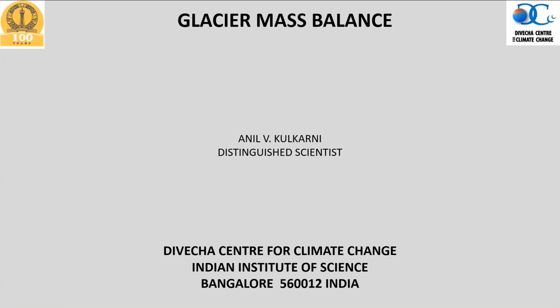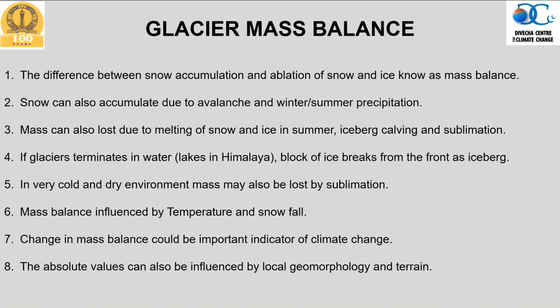What we will talk about today is glacier mass balance. Mass balance is nothing but the difference between snow accumulation — how much snow is accumulated on the glacier during winter — and how much melts in summer. The difference between these two is known as mass balance.